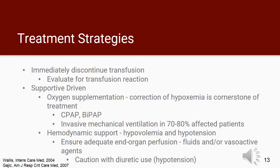The first step in treating TRALI is discontinuation of the offending transfusion, after which the patient should be evaluated for a transfusion reaction. Thereafter, TRALI treatment is supportive in nature. Oxygen supplementation to correct hypoxemia is the cornerstone of treatment and may include CPAP or BiPAP; however, invasive mechanical ventilation is necessary in 70-80% of these patients. Hemodynamic support is often necessary to combat hypovolemia and hypotension and to ensure end-organ perfusion, which often includes administration of fluids and/or vasoactive agents. Caution should be exercised with diuretic use due to the risk of worsening hypotension.